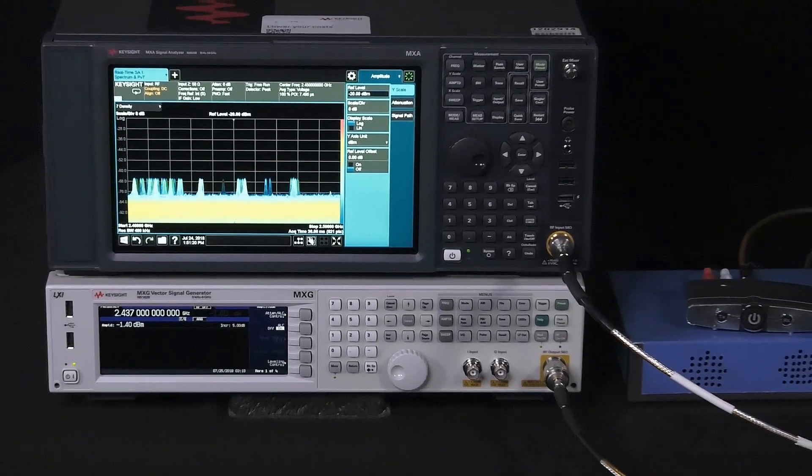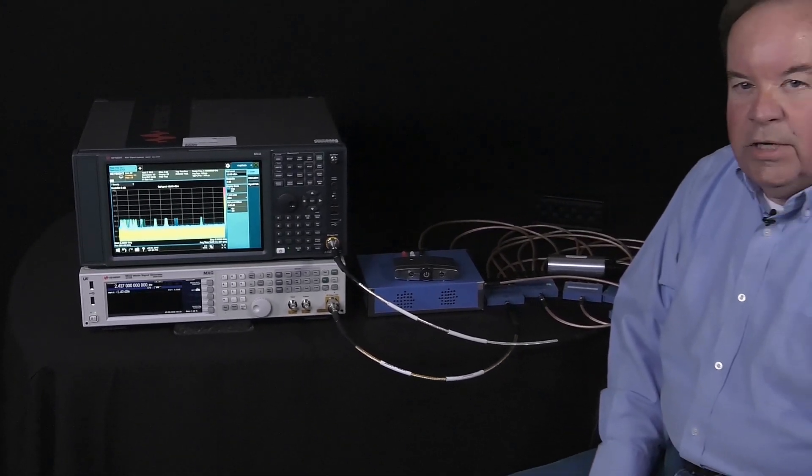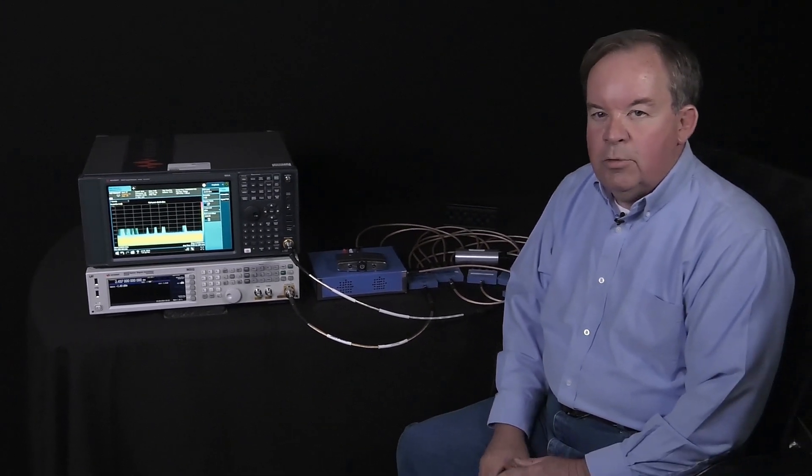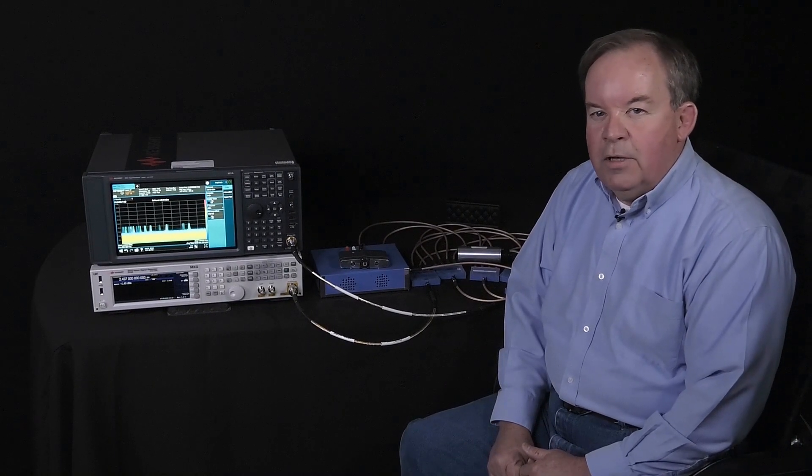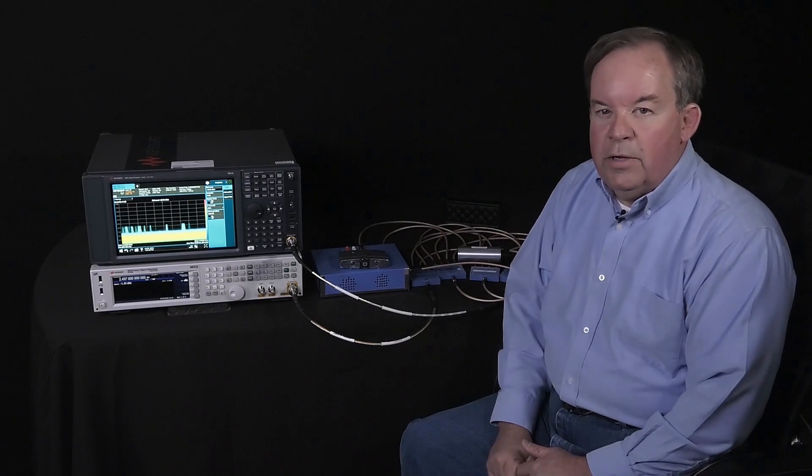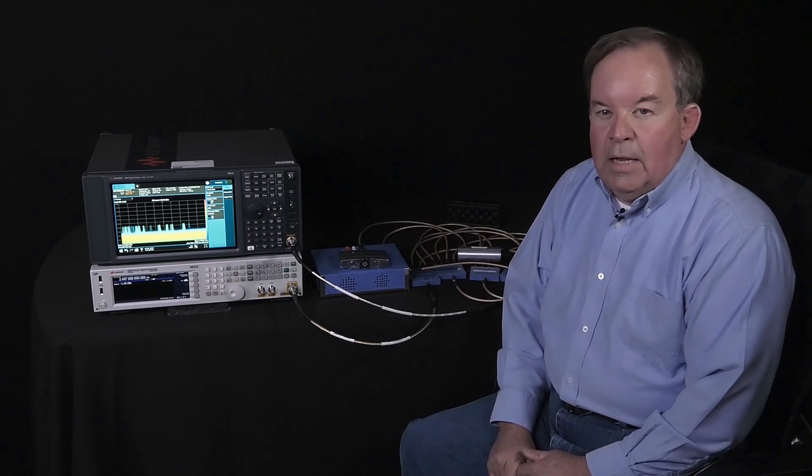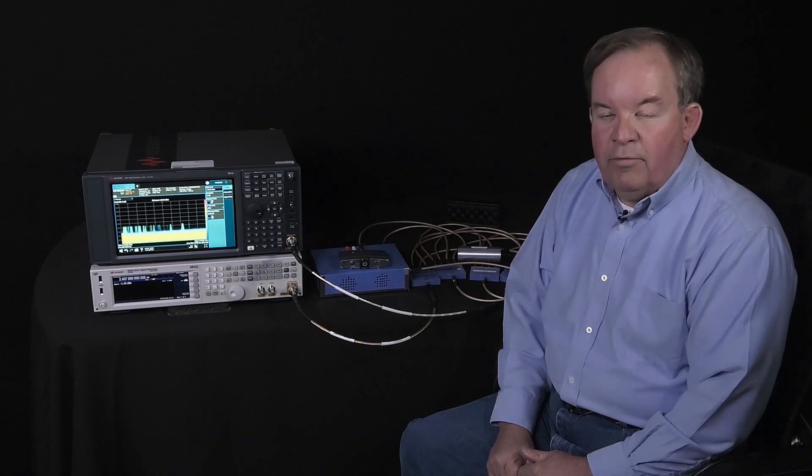So that's an example of coexistence test where the interfering signal at a certain amplitude was able to disrupt the functional wireless performance of our DUT. Using the MXA and the MXG, this test can be performed under multiple ways and is useful on any RF device that's operating in a mixed RF environment.